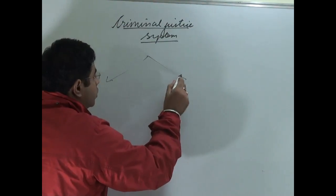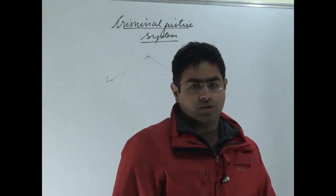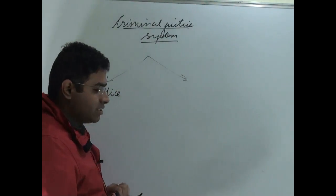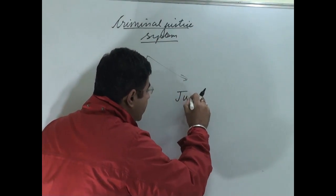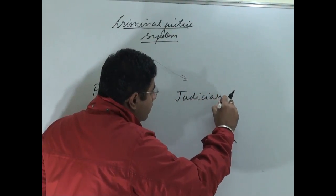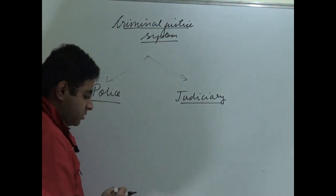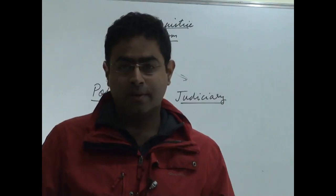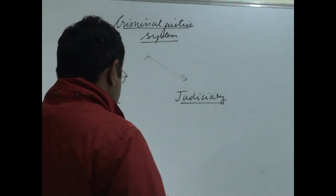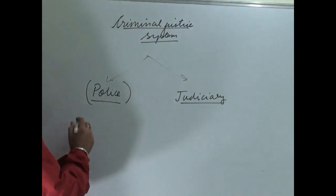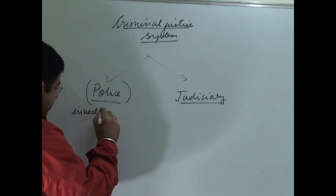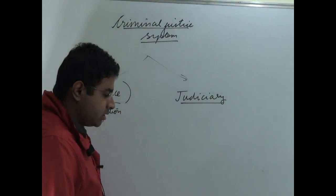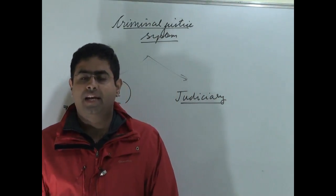In the criminal justice system, two core and fundamental institutions are involved. The first is the institution of police and the second is the institution of judiciary. When a crime is committed, it is the police which has to actually investigate the crime scene, so police is involved in the investigation process.